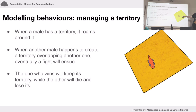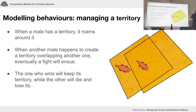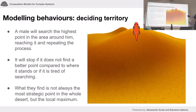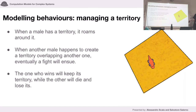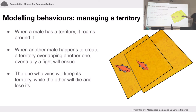Orange lizards tend to create bigger territories and blue lizards smaller ones. The size of the territory also depends on how steep the slope is — the steeper the slope, the smaller the territory, because it's more difficult to protect on a sloped surface. Once a territory is created, if another male creates a new territory in the same area, they will fight — especially orange ones, who do not share territories and are more aggressive.